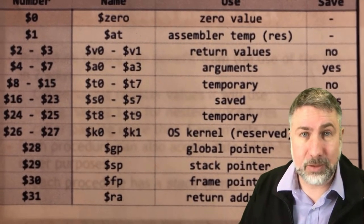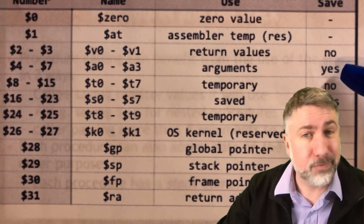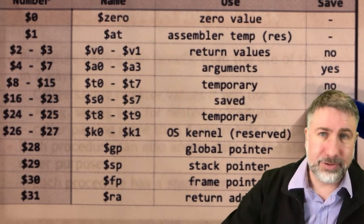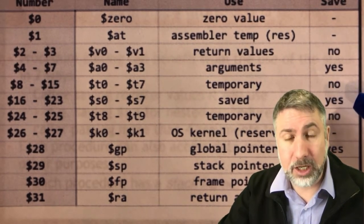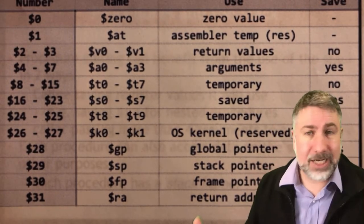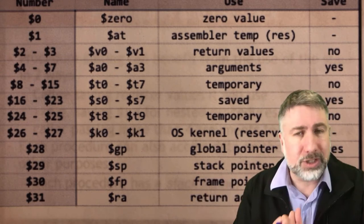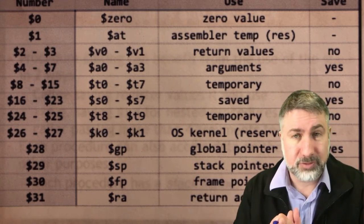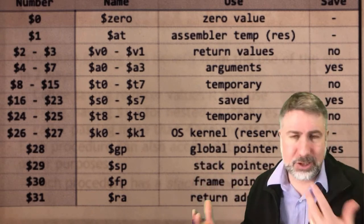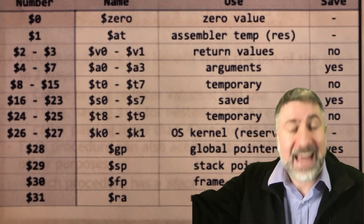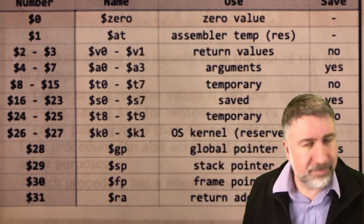If we look back at our register file, we can see that some things like arguments need to be saved if we're going to mess with them. Same with saved registers — they need to be saved if we're going to mess with them in our procedure. If we need extra registers because we're running out of space, or if we want to use the argument registers for some reason, we can put them onto the stack first, then use them, and at the end of the procedure retrieve them from the stack so they won't have been changed.